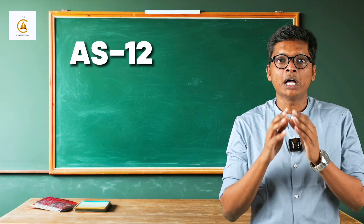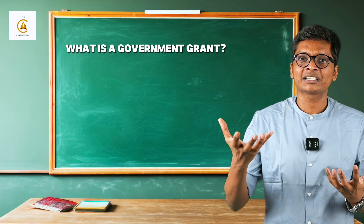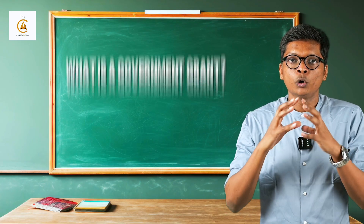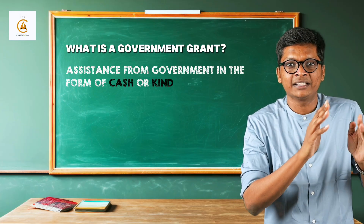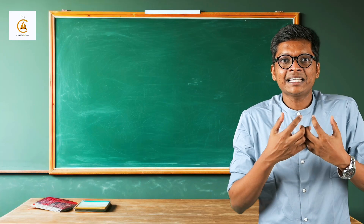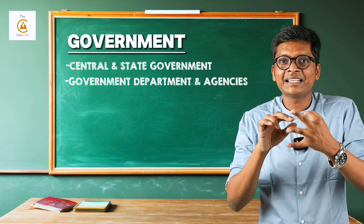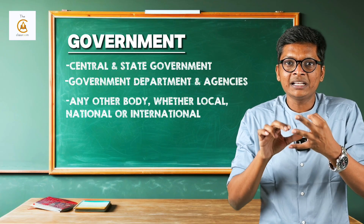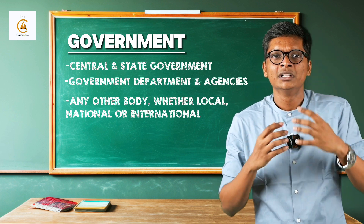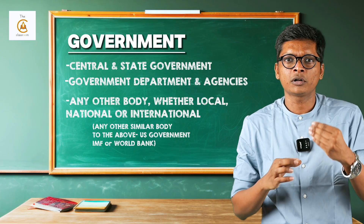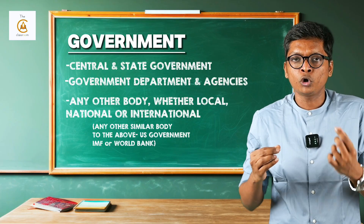Let's quickly revise AS 12 - Accounting for Government Grants. This standard has only two parts: what is a government grant, and how to account for a government grant. A government grant means any assistance from government in the form of cash or kind. Government includes three entities: central and state government, government departments and agencies, and any other body whether local, national, or international similar to the above - such as the US government, Indian government, IMF, or World Bank.